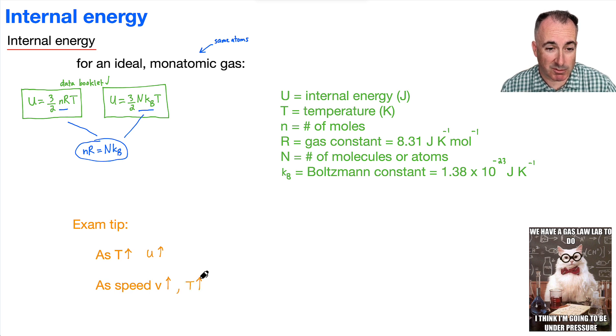But also as speed, this is really important, as the speed V goes up, what happens? Well, then the temperature goes up, because remember, temperature is defined as the average kinetic energy of the molecule. So if the speed goes up, the temperature goes up, and that means then the internal energy goes up. So this is kind of nice to know.